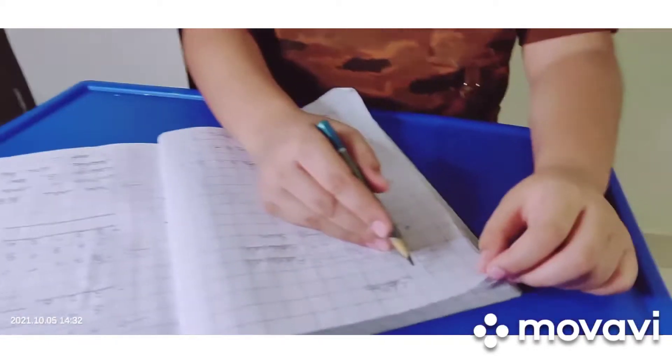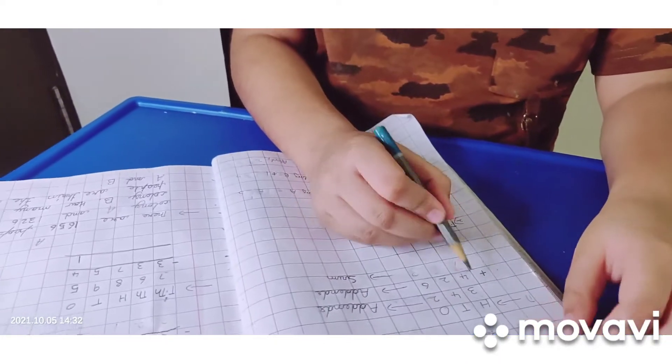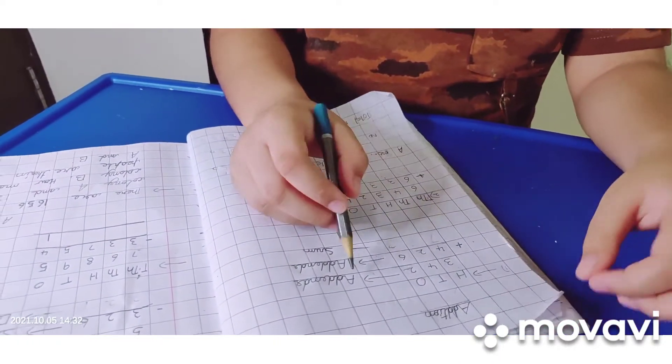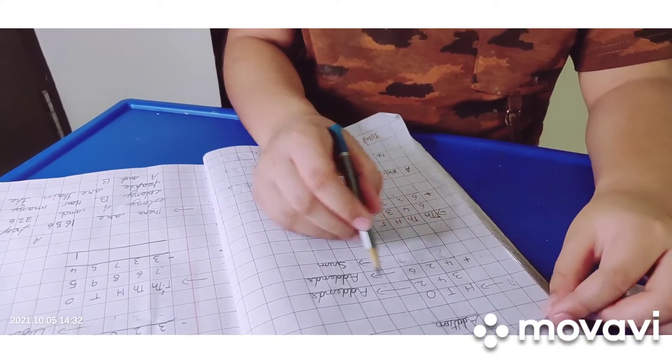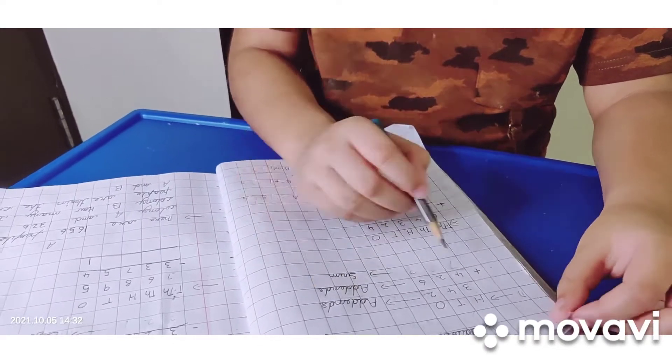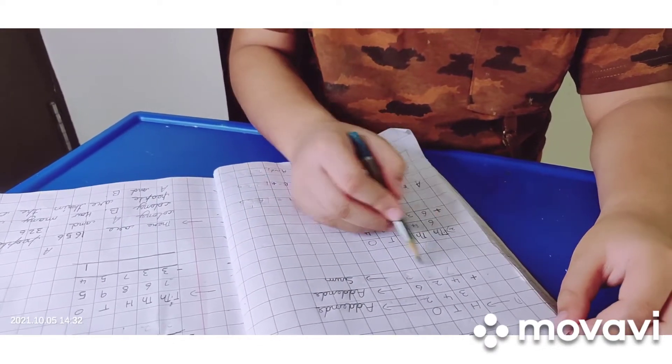First we are going to do additions. In additions, the numbers which are added are called addends and the answer is called the sum.